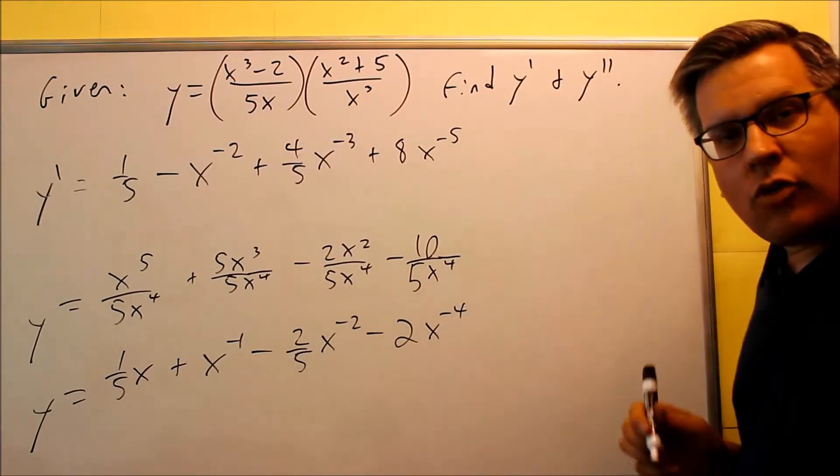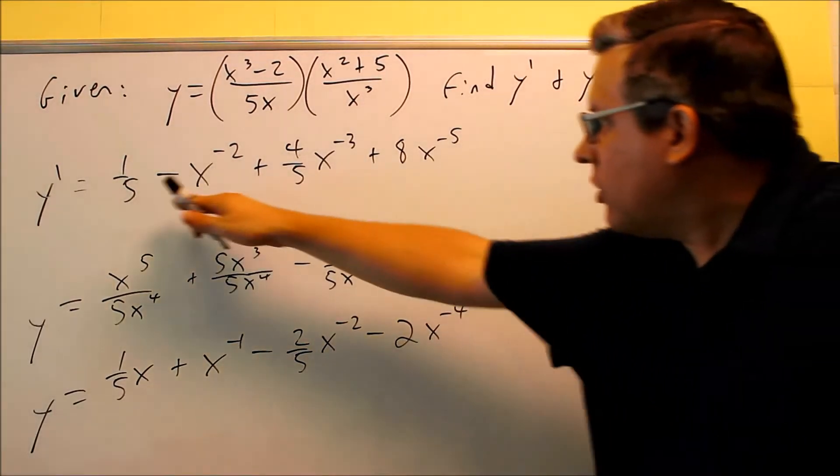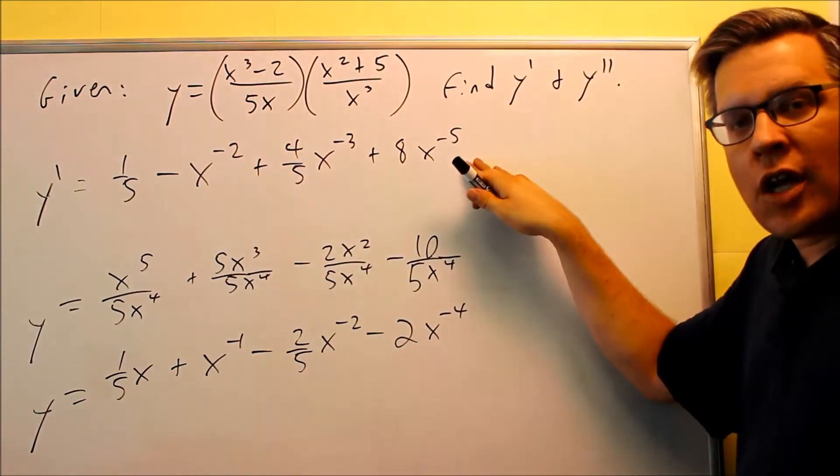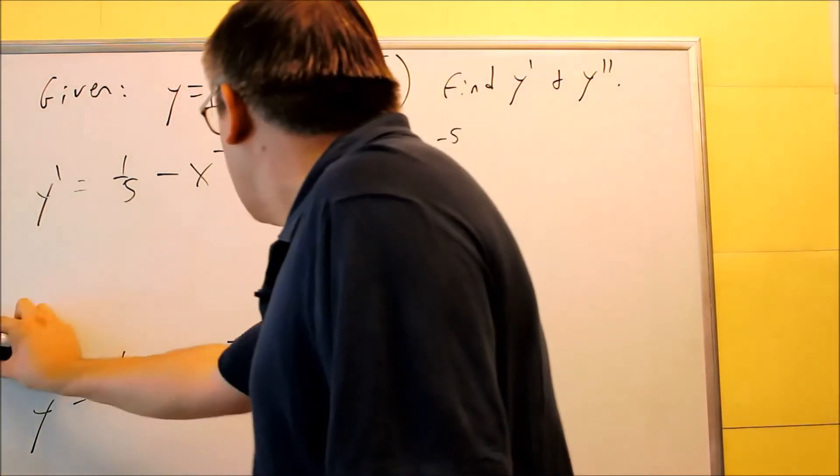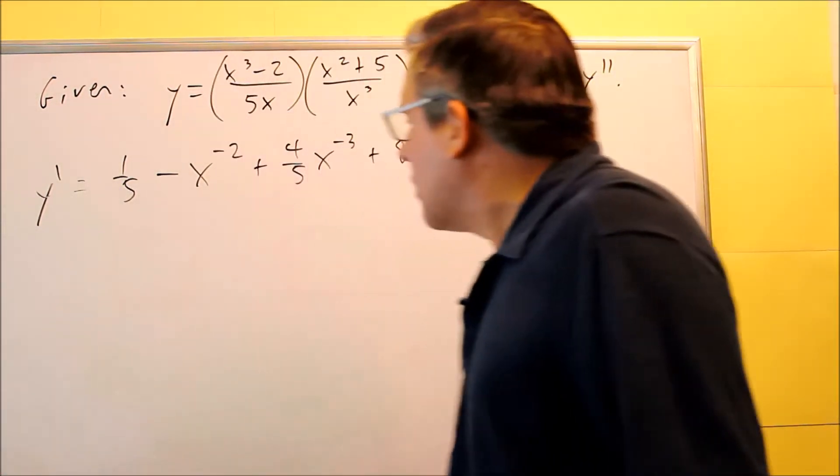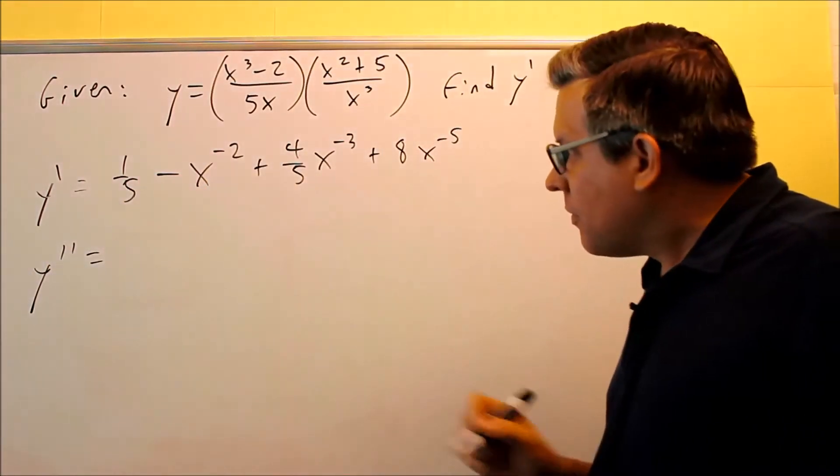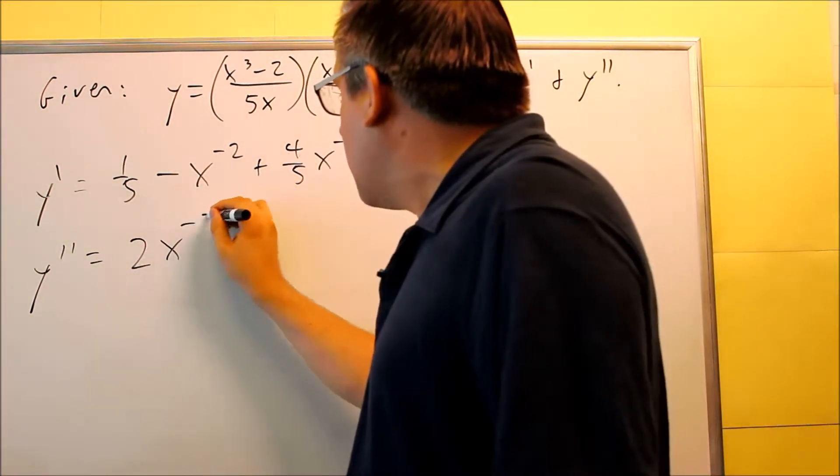Now I'll clean that up later. I want to leave it in this form because I've got to take the second derivative and I want to keep it in this format with the negative exponents so that way I can take the second derivative. Alright, so let's do that one now. The second derivative is going to be the derivative of one fifth is 0. This power comes down, you get positive 2x to the negative 3.